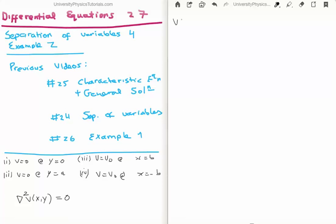So I'm just going to write that up here. So v is equal to a times e to the k x plus b times e to the minus k x. And we need to multiply that by c times cos k y, and we have d times the sine of k y. And the next thing we need to do is to apply the boundary conditions.